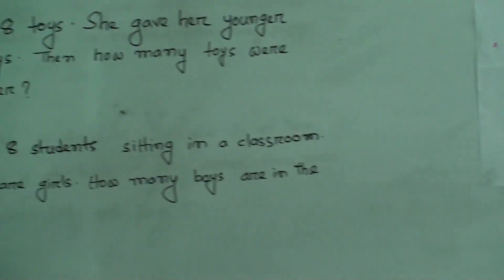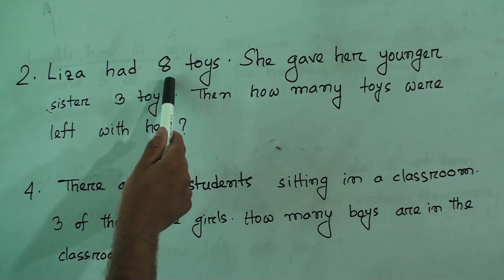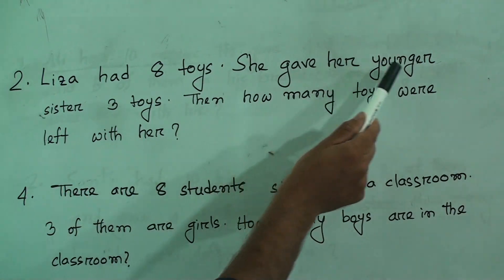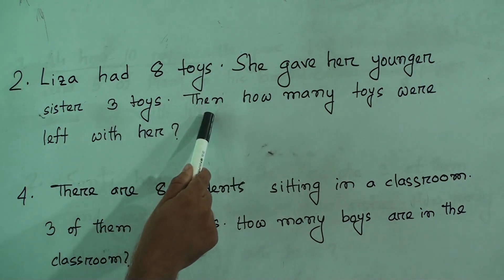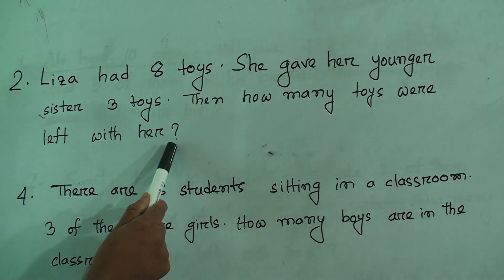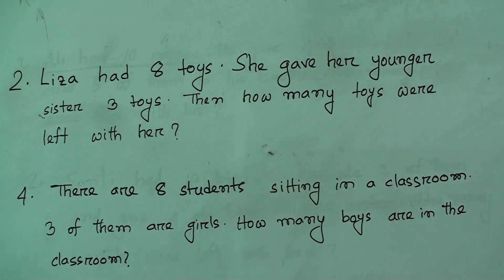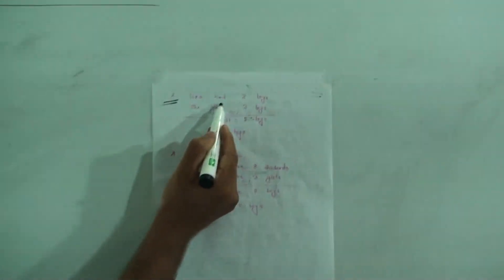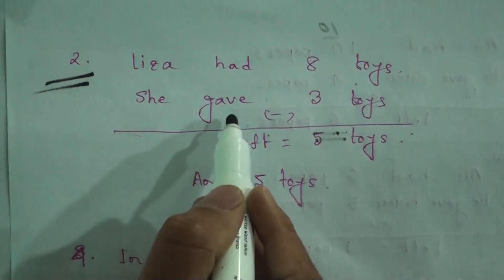Question number two: Lisa had eight toys. She gave her younger sister three toys. Then how many toys are left with her? Now go to the solution. Question number two: Lisa had eight toys, she gave three toys.